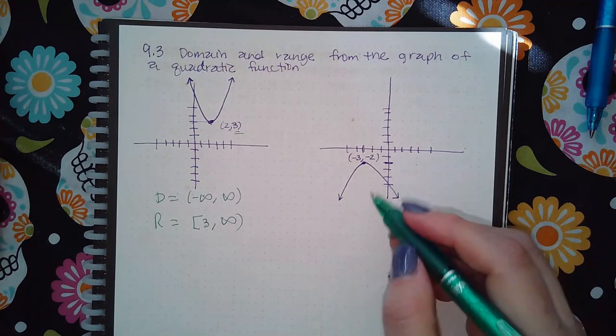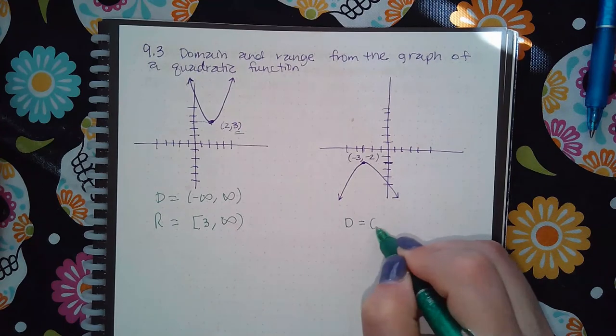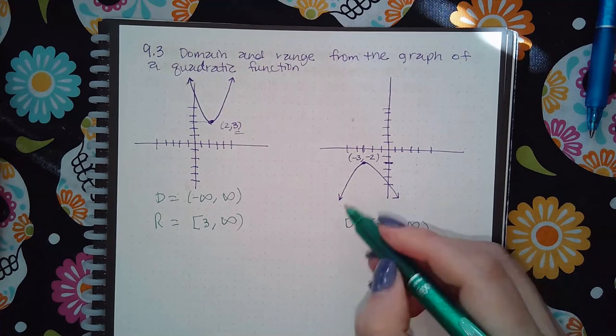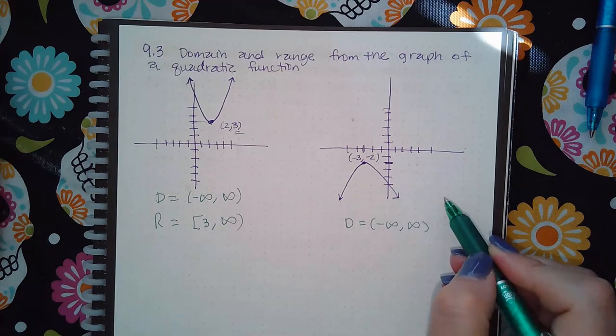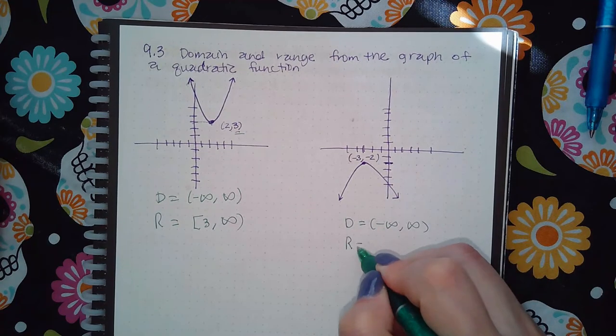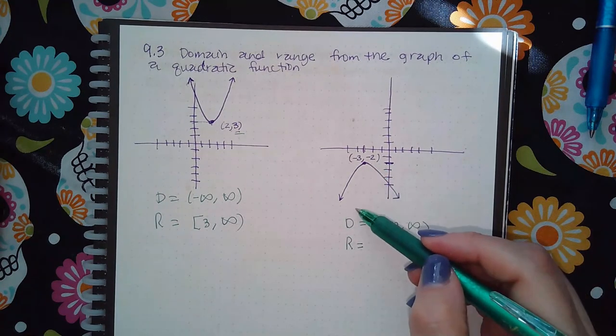For this other kind of graph when the parabola opens downward, the domain is still negative infinity to infinity because it's still going to the left forever and to the right forever. But the range is going to be from the bottom to the top.